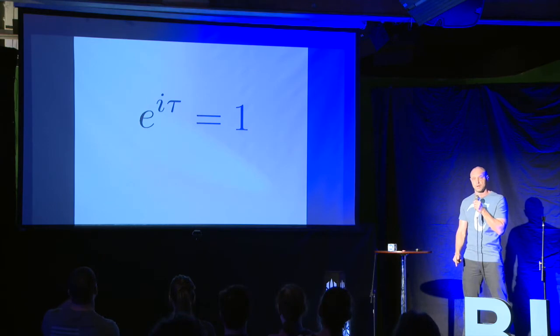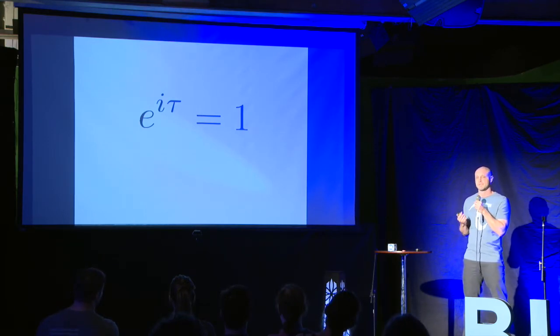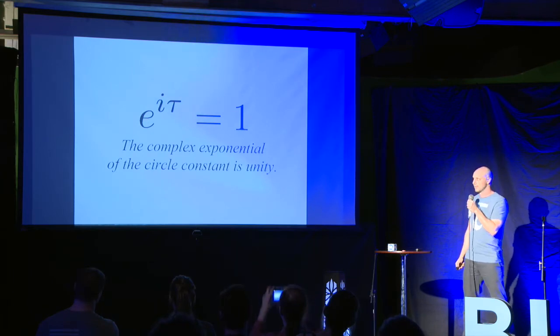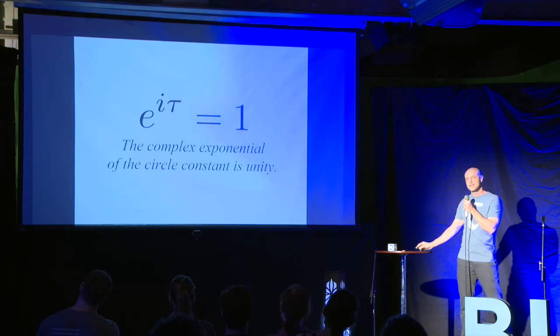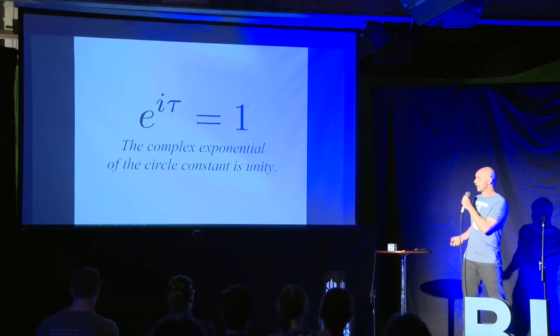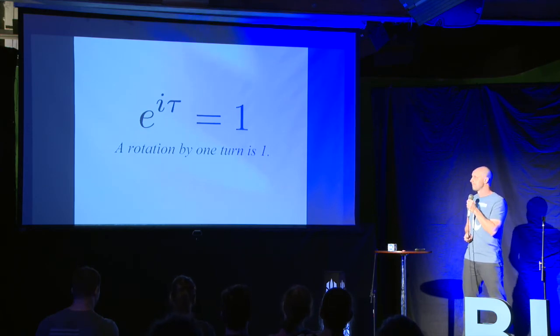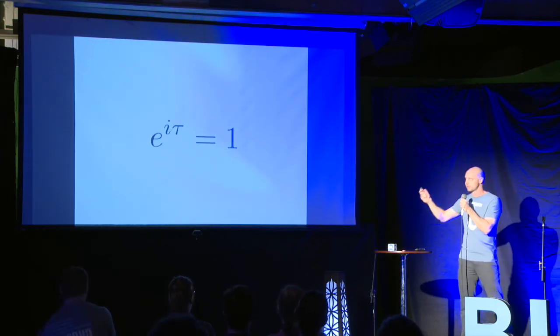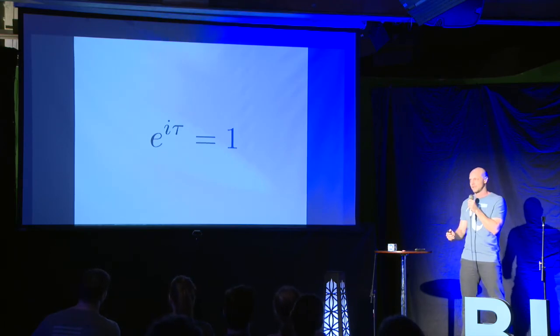Let's look at Euler's identity in terms of tau instead of pi. It looks like this: e to the i tau equals 1. So 1 is what's known in algebra as the multiplicative identity, also called unity. This says that the complex exponential of the circle constant is unity. These exponentials are also related to rotations in the complex plane — rotate by a particular angle, rotate complex numbers. This represents the rotation by a full turn, so what this says is that a rotation by one turn is 1; it takes you all the way back to the beginning. I submit that this should be known as Euler's identity — the most natural statement. But people complain it only relates four numbers, so I'd like to note that e to the i tau equals 1 plus 0, which does relate all five most important numbers: 0, 1, i, e, and tau.